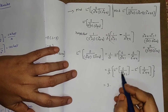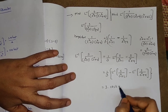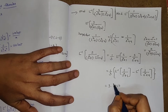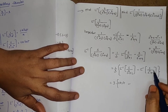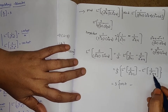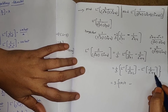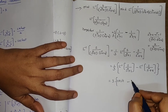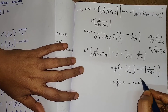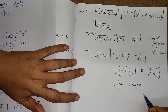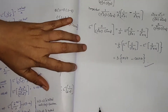With a = 1, L inverse of S/(S² + 1) is cos(t). And L inverse of S/(S² + 4) — here S² + 4 = S² + 2² — gives cos(2t). So the final answer is 1/3 times [cos(t) minus cos(2t)].